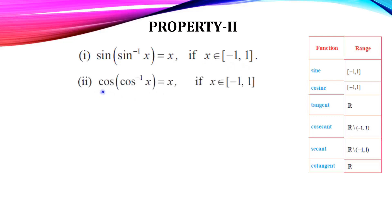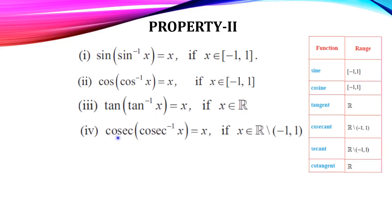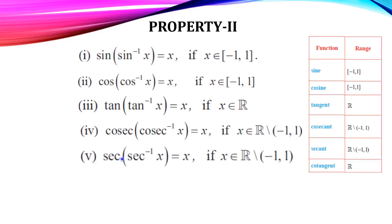Similarly, cos of cos inverse of x = x, where x belongs to [−1, 1]. Tan of tan inverse of x = x, where x belongs to all real numbers. Cosecant of cosecant inverse of x = x, if x belongs to all real numbers except (−1, 1). Similarly for secant, x must lie in real numbers except (−1, 1). And cot of cot inverse of x = x, where x belongs to all real numbers.